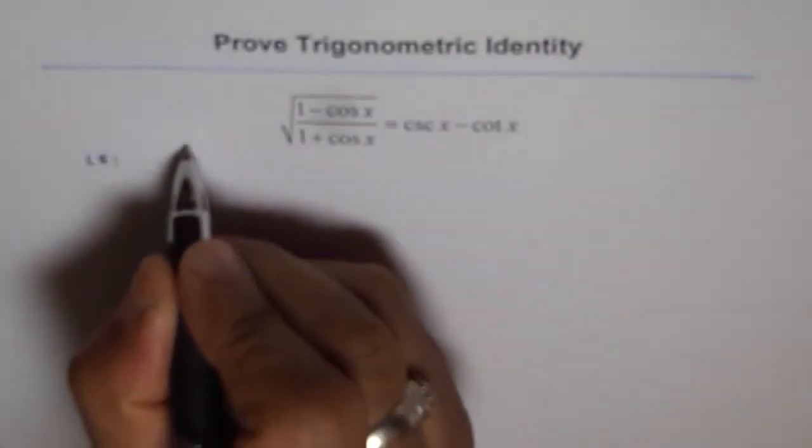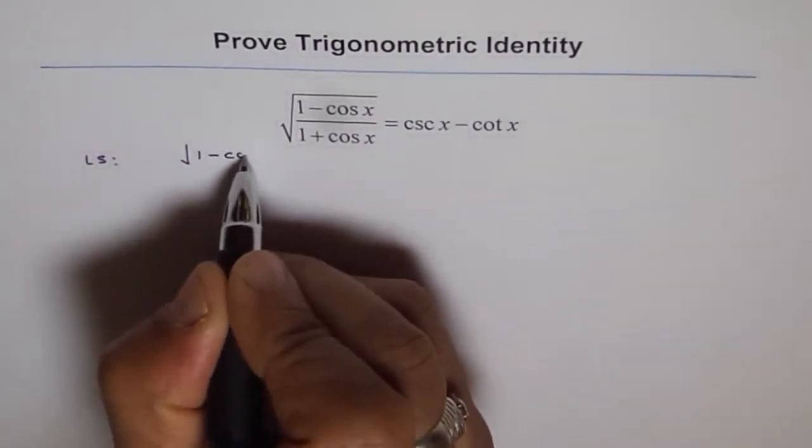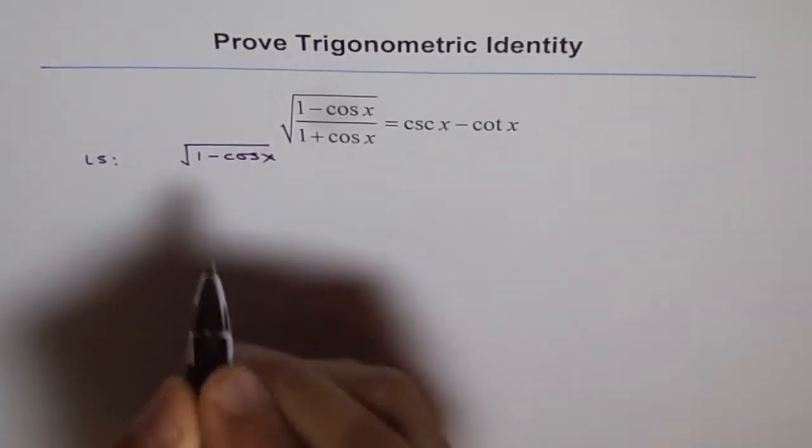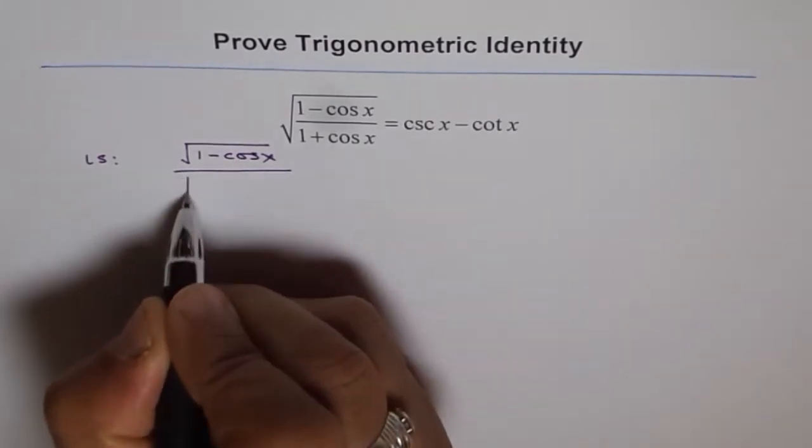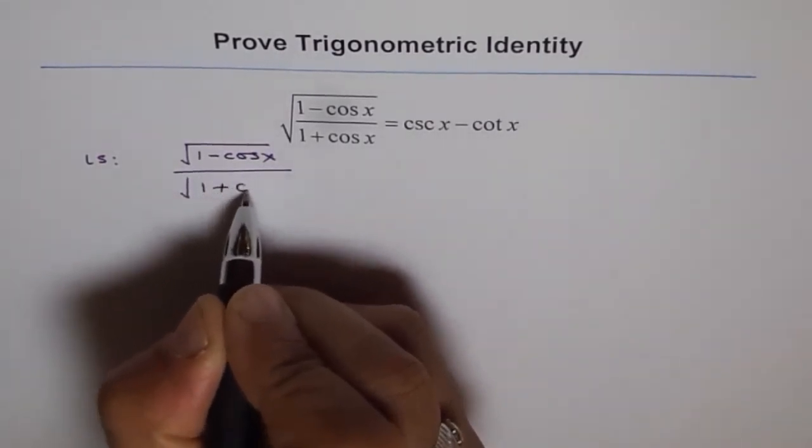The left side can be written as square root of 1 minus cos x divided by square root of 1 plus cos x.